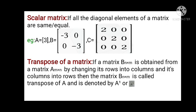Coming to the transpose of a matrix: if a matrix B of order n by m is obtained from a matrix A of order m by n by changing its rows into columns and its columns into rows, and you get the same matrix, then it is said to be the transpose of matrix A.